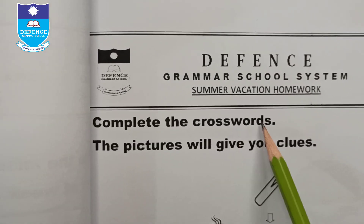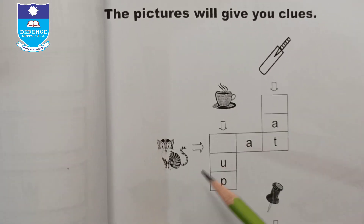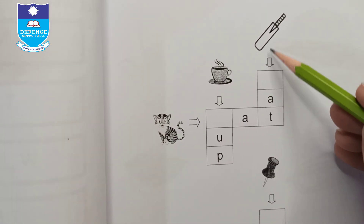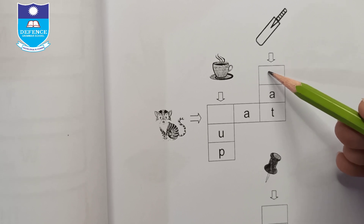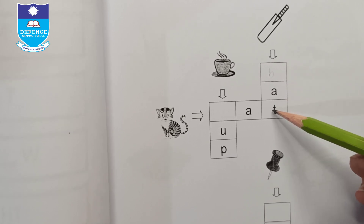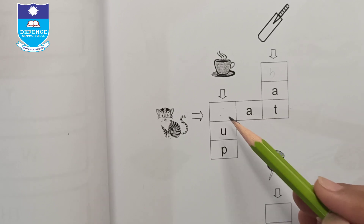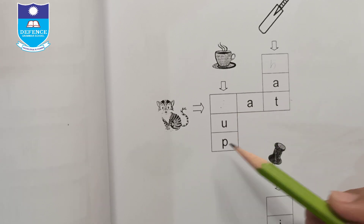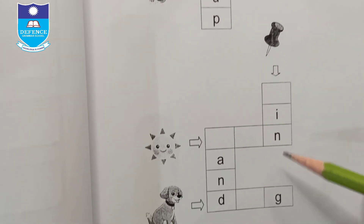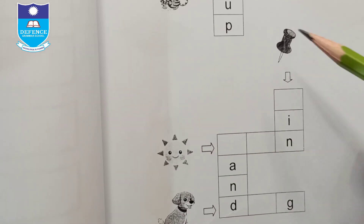Complete the crossword. The pictures will give you clues. Write the names — for example, write 'B-A-T' for bat, and 'C-A-T' for cat. Similarly, fill in all the boxes and complete the names of the things shown.